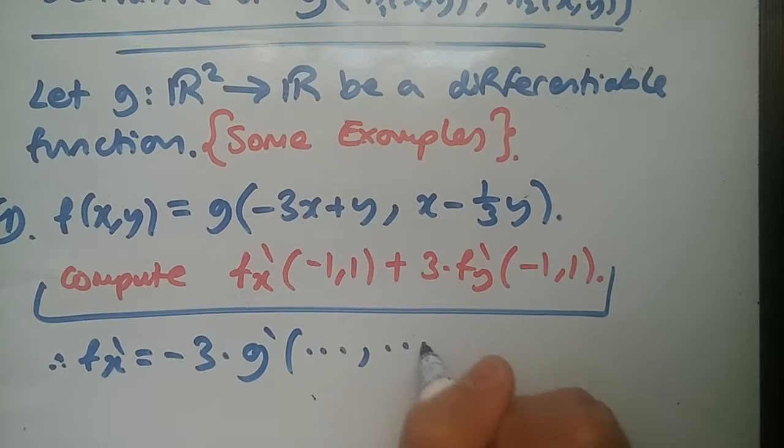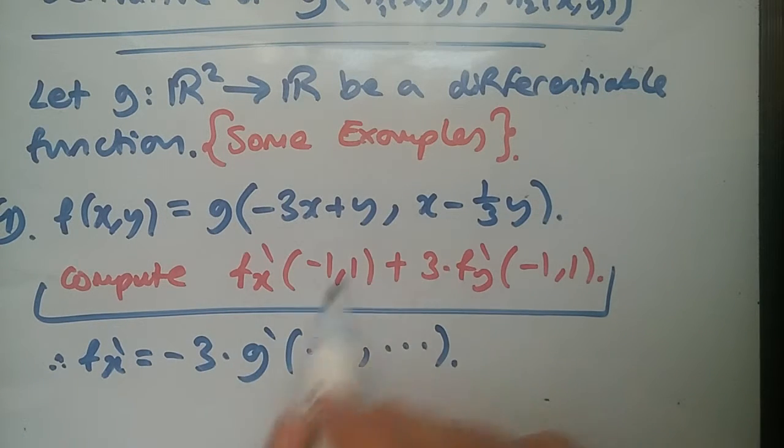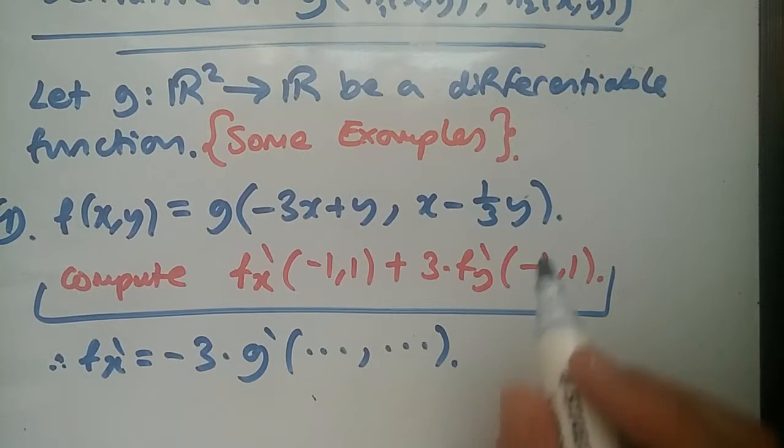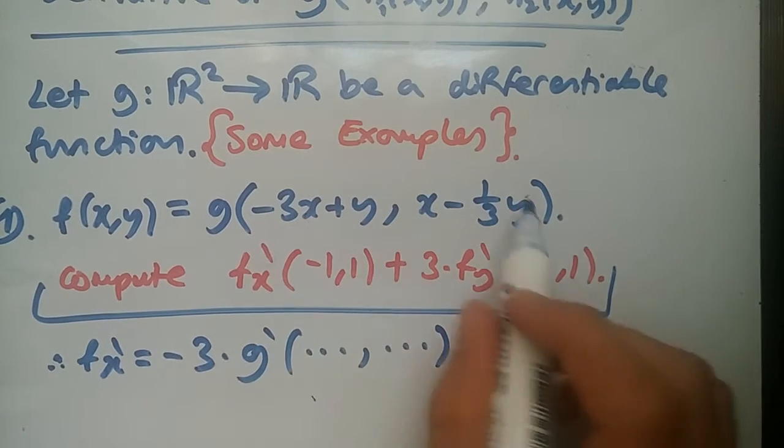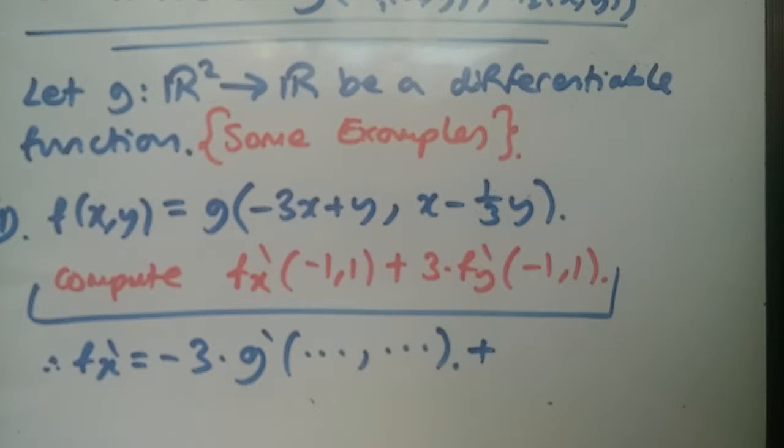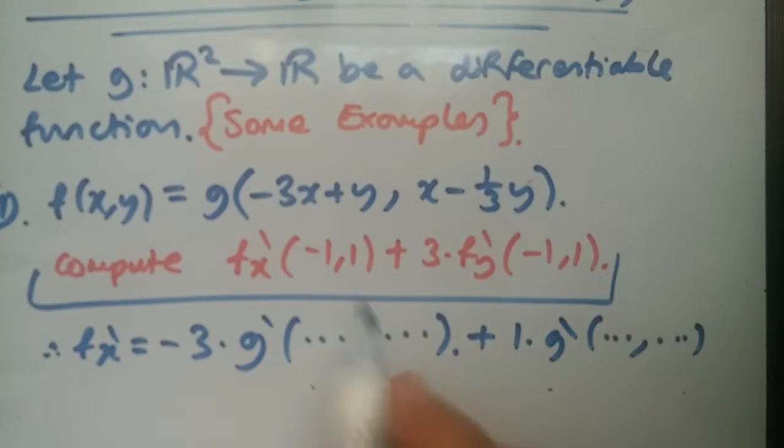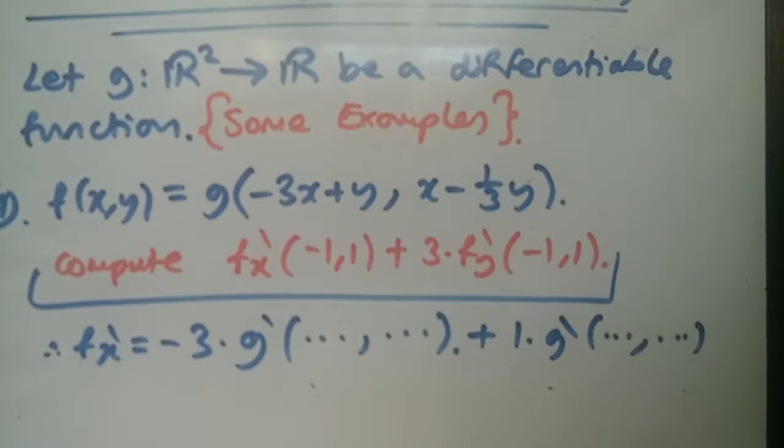Then here we just times the function, the derivative of the function itself, which is g prime times dot dot inside dot dot here. The reason why I put dots is because I don't want to write -3x plus y and x minus 1 over 3y. This representation is implied to be this at a derivative point.